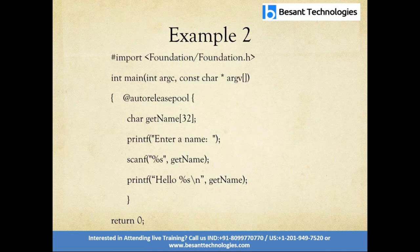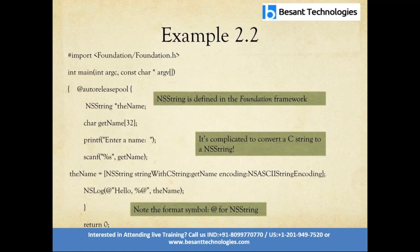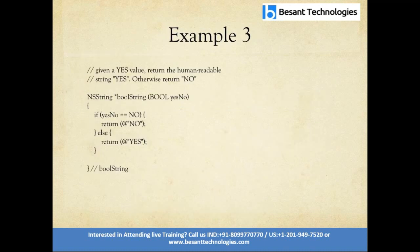Example two involves a Boolean and a character variable called getName, initialized to 32. We use printf to print hello with getName. NSString is defined in the Foundation framework and is compiled to convert a C string to an NSString. Example three shows Boolean use: using BOOL variables with YES or NO. If YES equals NO, it is false; otherwise the else condition returns YES.